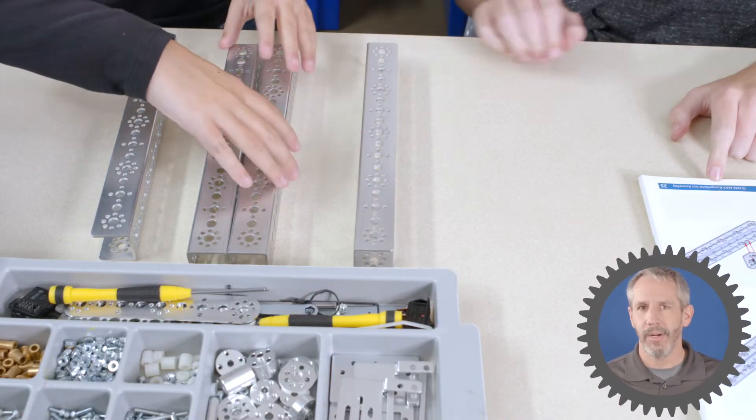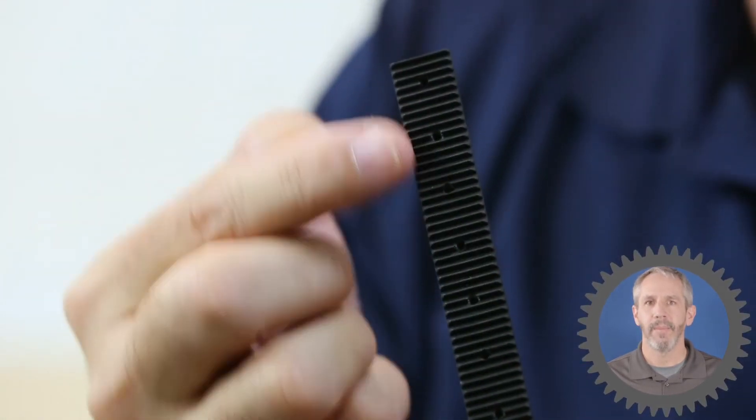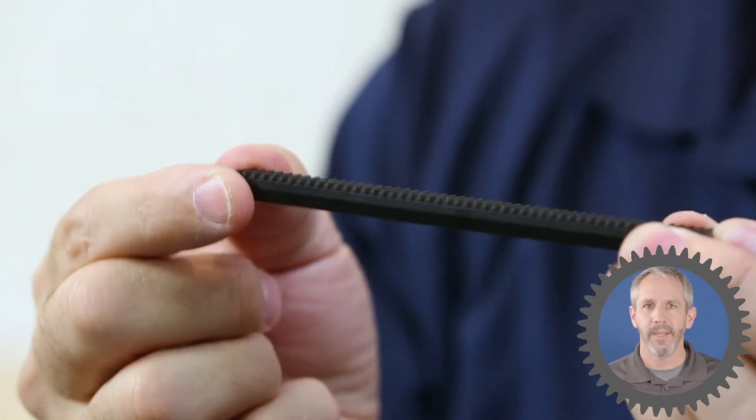Next, consider the parts that you have to build your lifting mechanism. There are several Tetrix Max components that make building lifting mechanisms easier. So let's look at some examples.